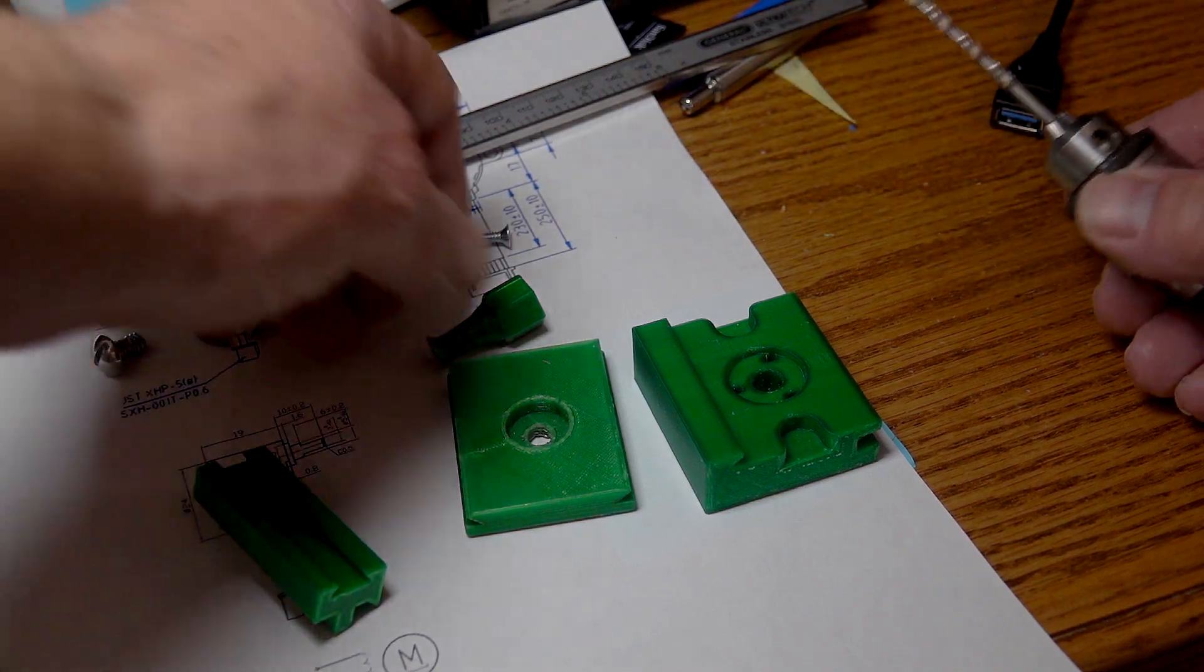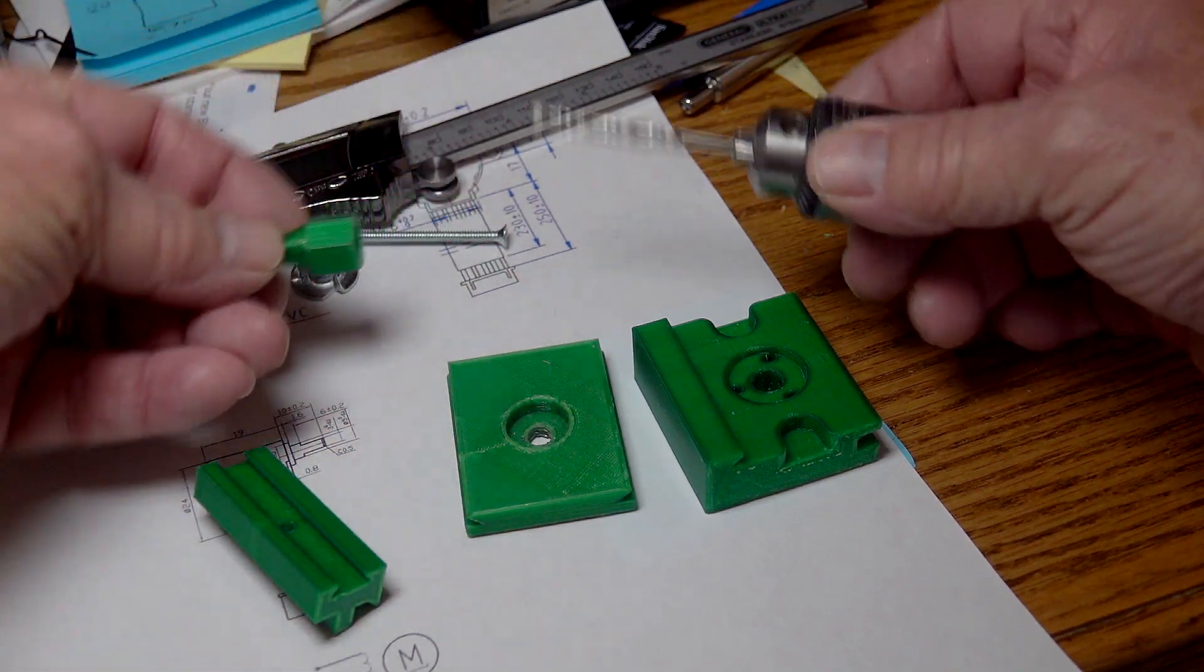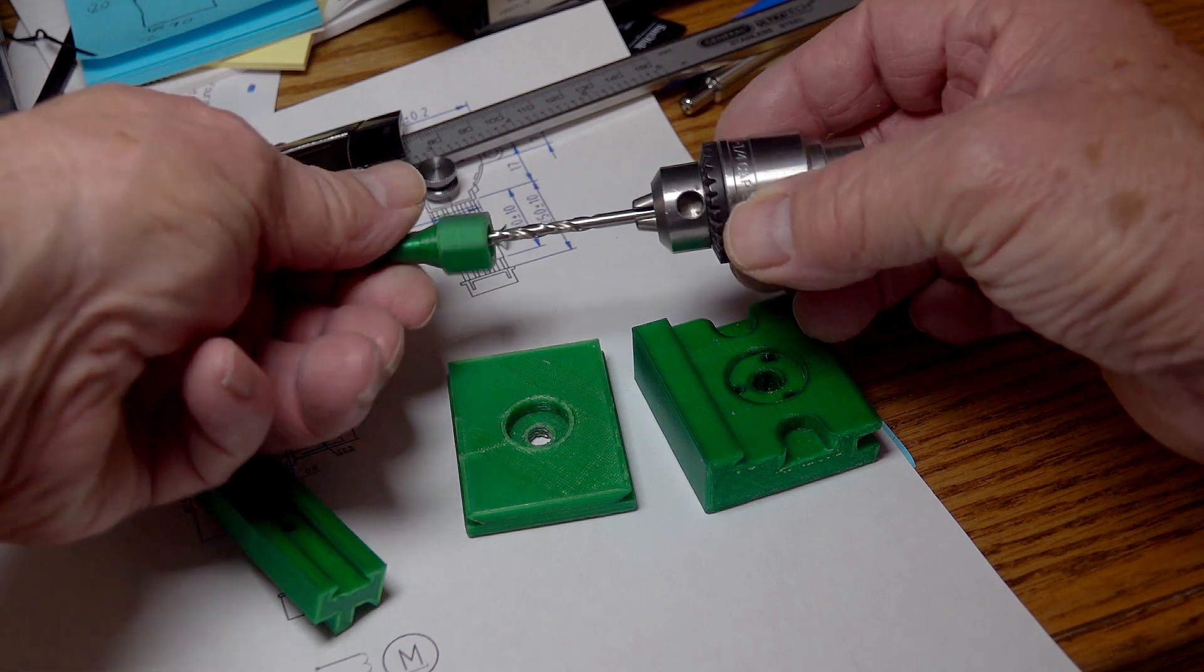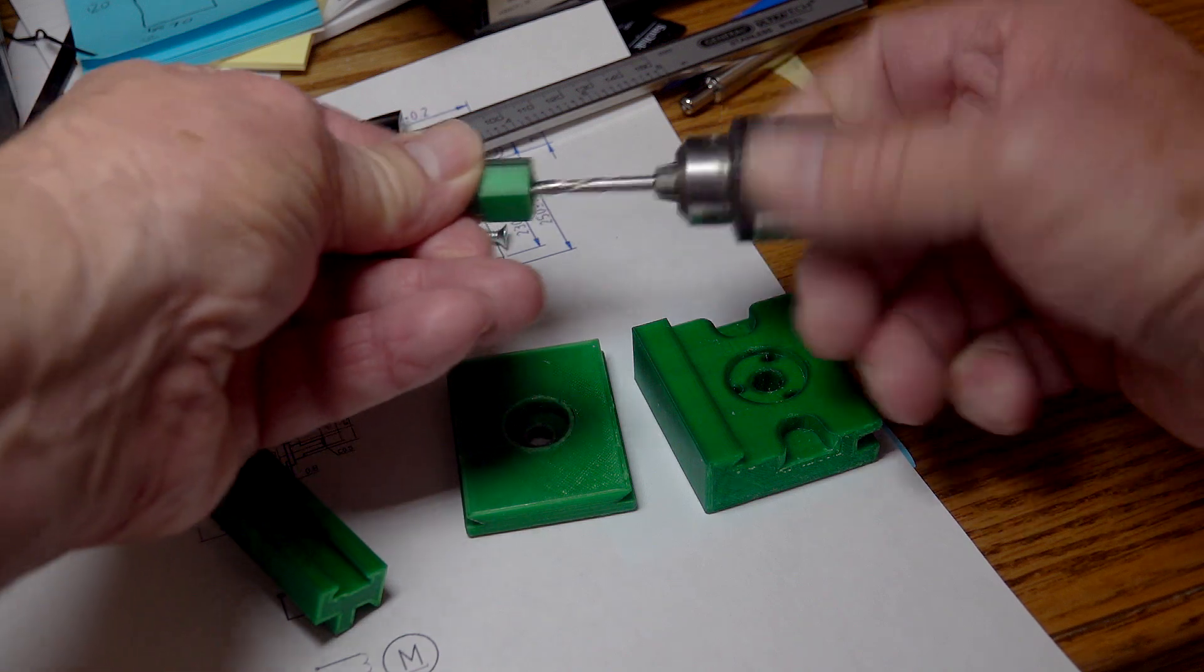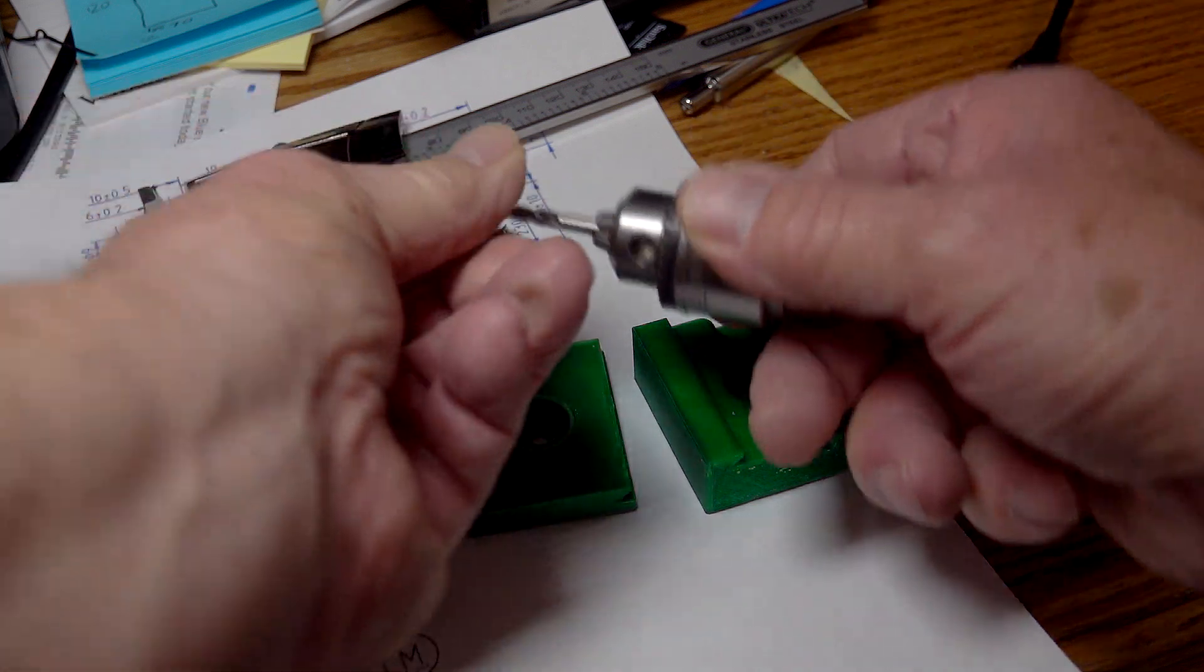When the parts have been printed, the holes in the jaw and knob may require a little cleaning. I used a 9/64th drill bit in a chuck and turn it by hand to clean the holes.